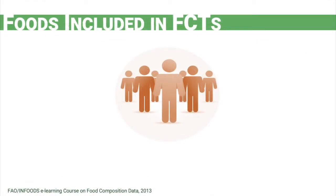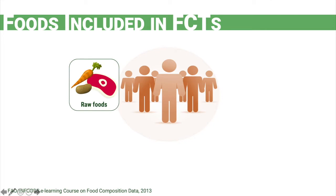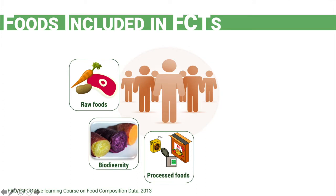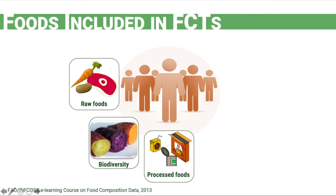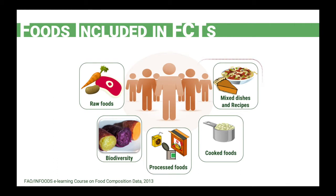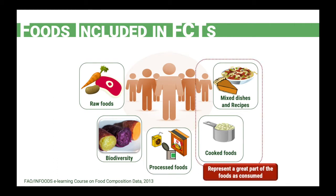If we are preparing or updating a food composition table for a country, we need to include all the foods that are consumed by the given population. This means we need to include raw foods or foods as purchased, data regarding the biodiversity of the country, processed foods, and also cooked foods and mixed dishes. These last two represent the foods as consumed in a country, so this category is extremely important in a food composition table.